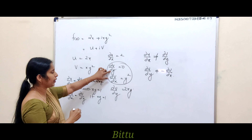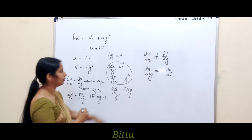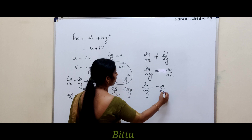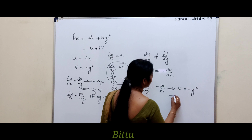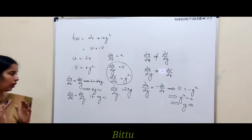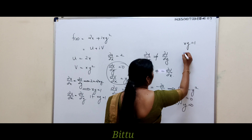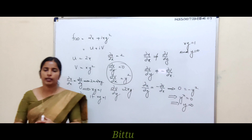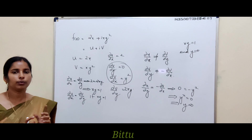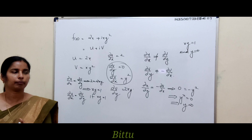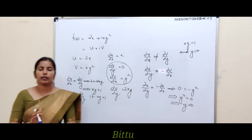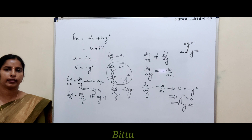Similarly, checking the second CR equation: ∂u/∂y = −∂v/∂x gives 0 = −y², which implies y² = 0, so y = 0. The CR equations are satisfied only when xy = 1 and y = 0. But these two conditions cannot hold simultaneously — if y = 0, then xy = 0 ≠ 1. So the Cauchy-Riemann equations are nowhere satisfied, and the function is not analytic.